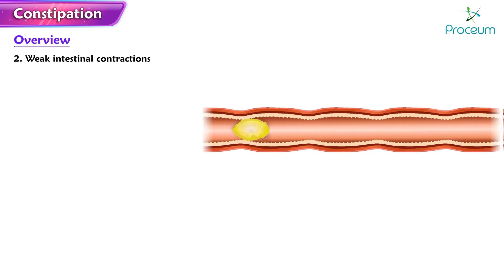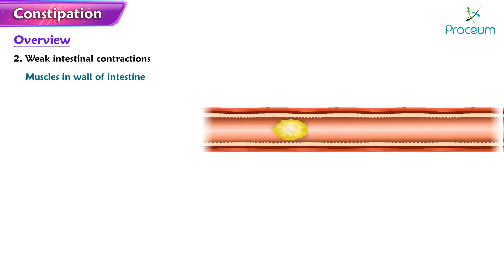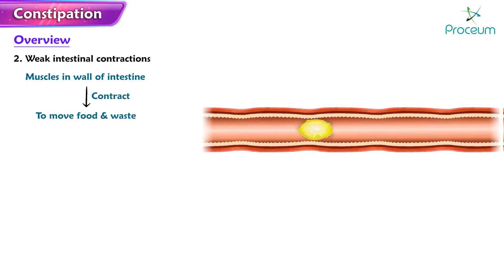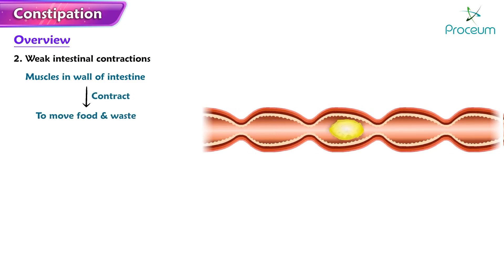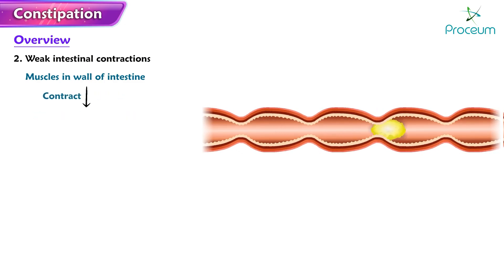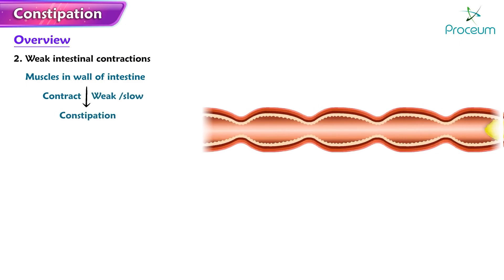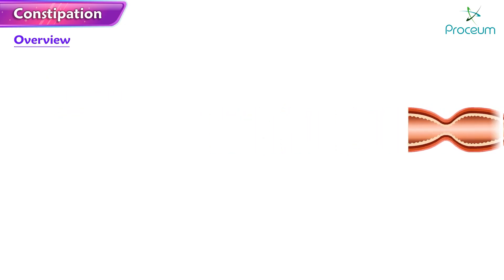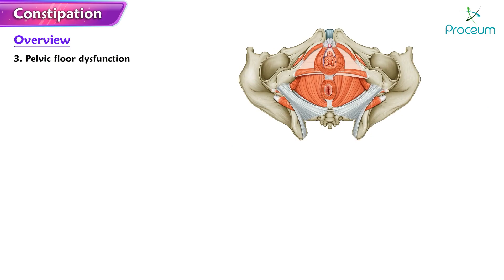Two: weak intestinal contractions. The muscles in the wall of the intestine contract to move food and waste through the digestive tract. If these contractions are weak or slow, it can lead to constipation.